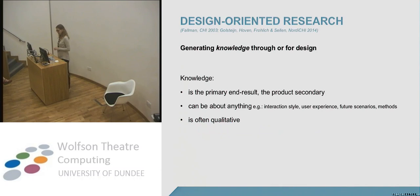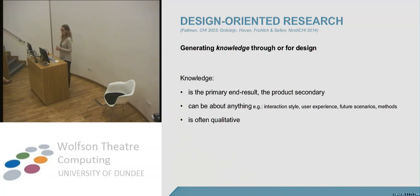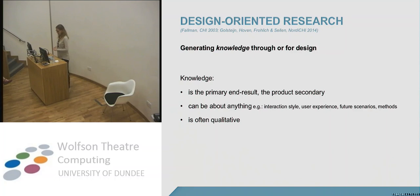When I talk about design research, it's important to realise it's about generating knowledge — that's the first priority. Even if it's design research, the aim is not to create the best design; the aim is to generate the most useful knowledge you can, through or for design. 'Through' means by making something, and 'for design' means you study something that might later inspire a design. I always tell my design students that if they're really good, you can have a beautiful design and knowledge — but if you have to choose, knowledge is the primary focus.